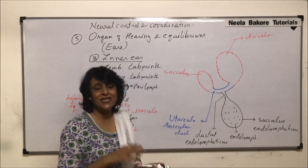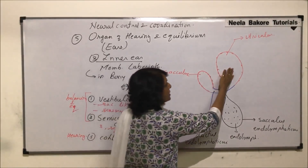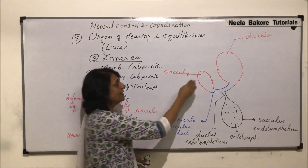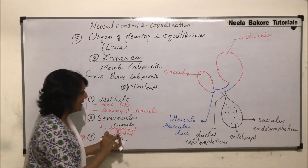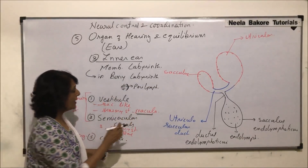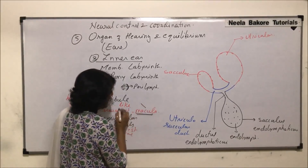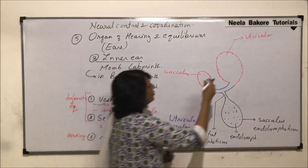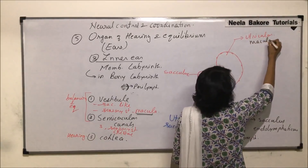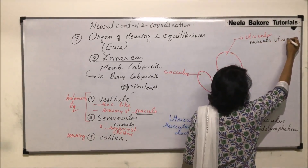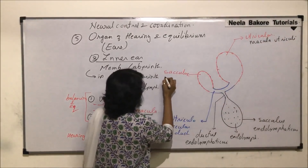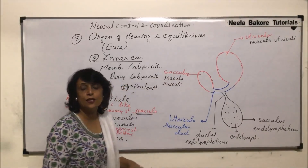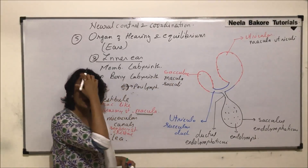So there are two sac-like structures in the vestibule: the bigger one called utriculus and the smaller one called sacculus. In the utriculus and sacculus are present the macula — these sensory structures are called macula utriculi in the utriculus, and macula sacculi in the sacculus. We will see the structure of this sensory part a little later.